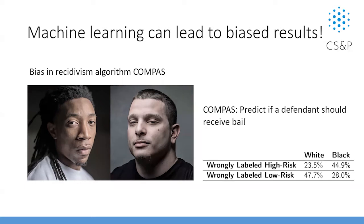Fairness is normally derived from database or model bias. Here is a very famous example: when people tried to use a model to predict if a defendant should receive bail, they used a machine learning model to help make the decision. People found a huge gap between black and white defendants. For the wrong label 'high risk,' the rate for white was around 23%, but for black it doubled. So this model leads to a biased result — we say this model is unfair.